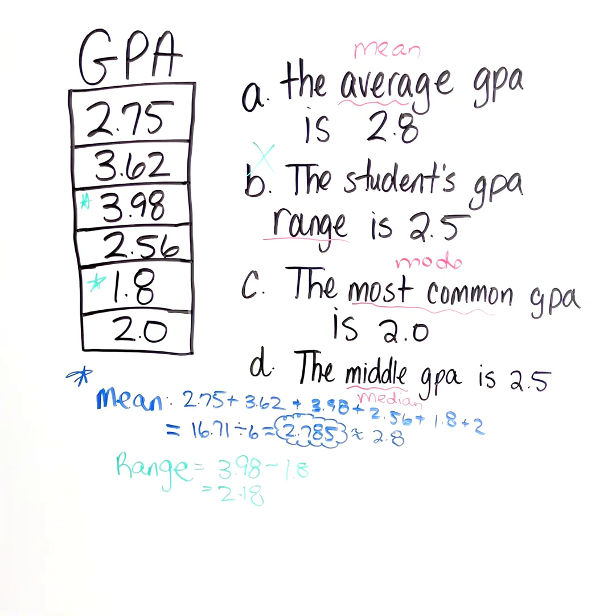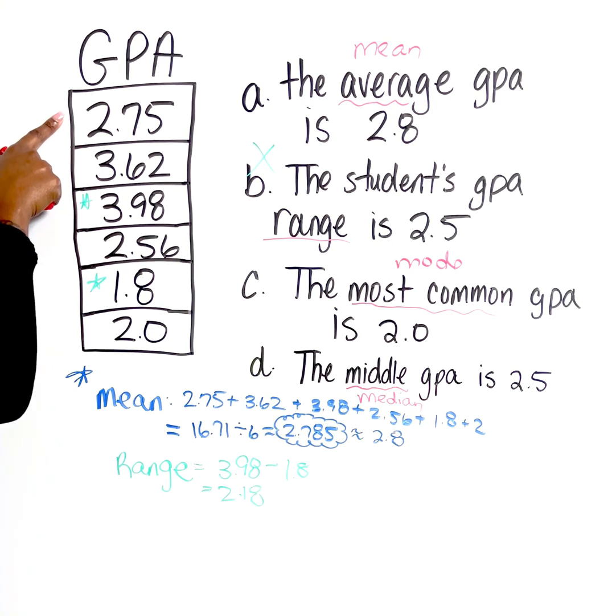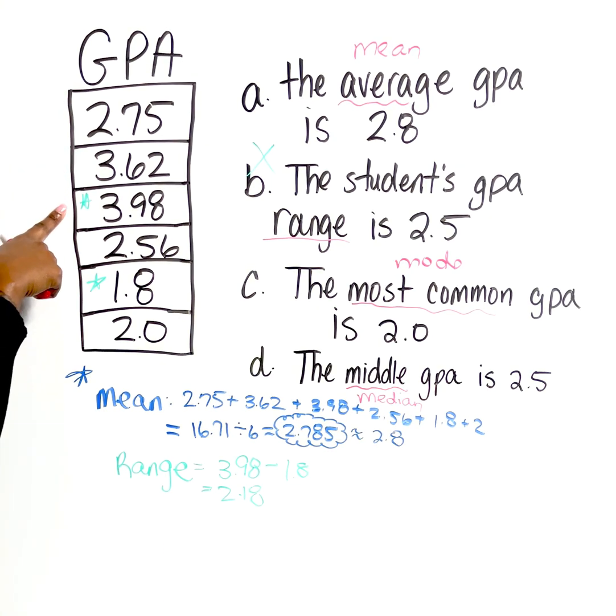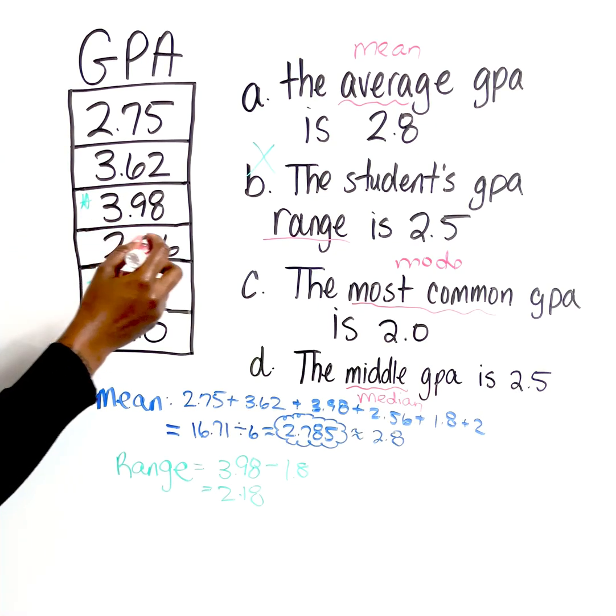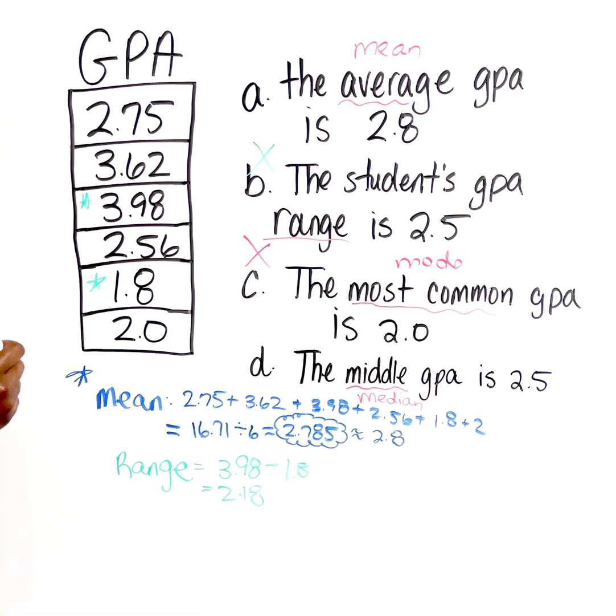C says the most common GPA is 2. So that represents what? The mode. So if you look at our values, we have 2.75, 3.62, 3.98, 2.56, 1.8, and 2.0. We don't have any values that repeat. So we know that this is not an option.